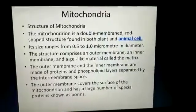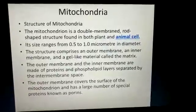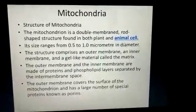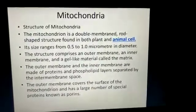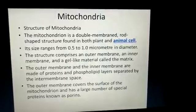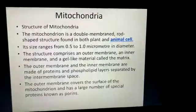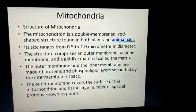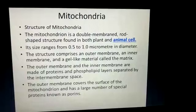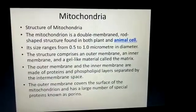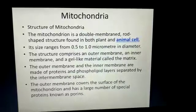Mitochondria, as we have seen in the diagram, is a double membrane structure and it is a rod shape structure. It is present in both plant cells and animal cells. Its size is 0.5 to 1 micrometer in diameter. Its outer membrane comprises basically of a structure known as porins, which are special proteins.